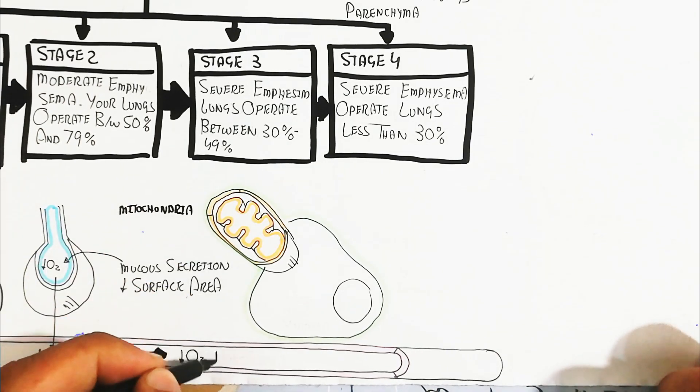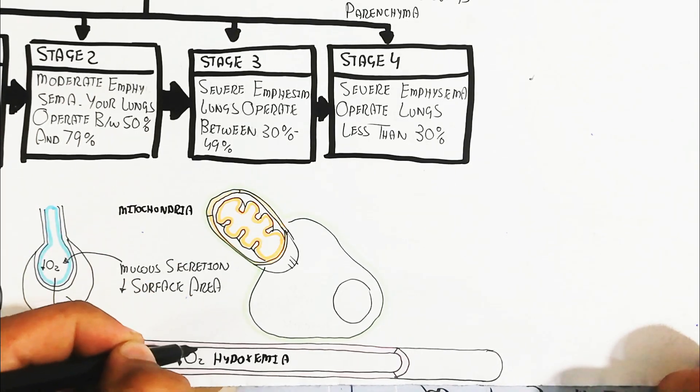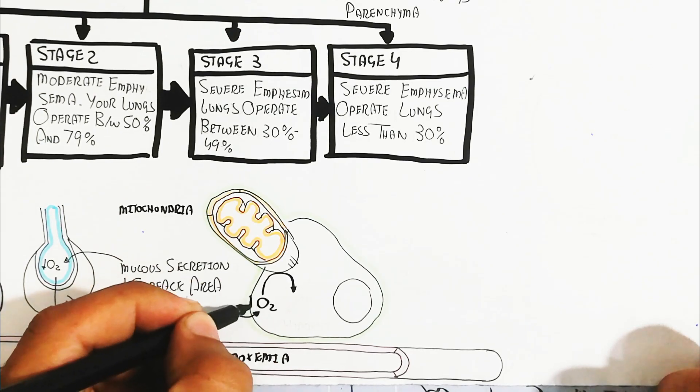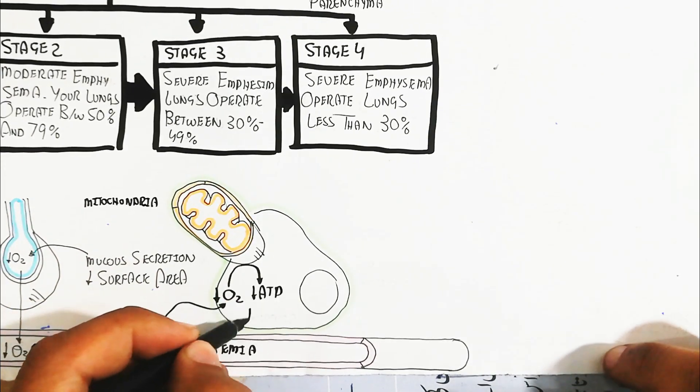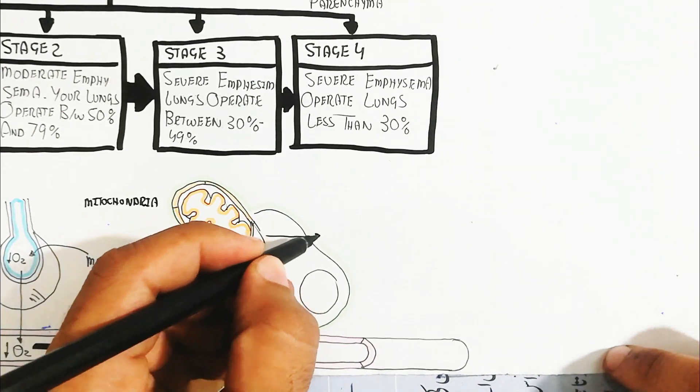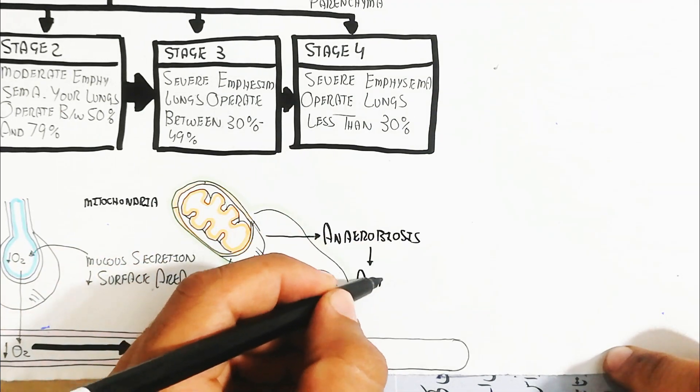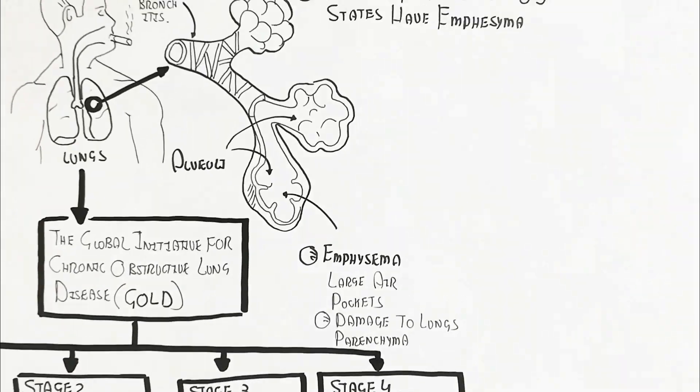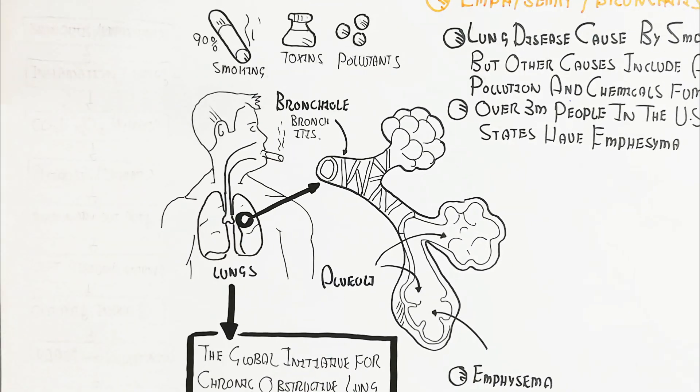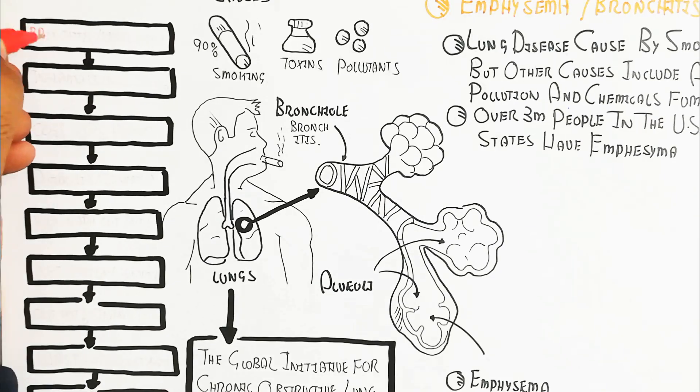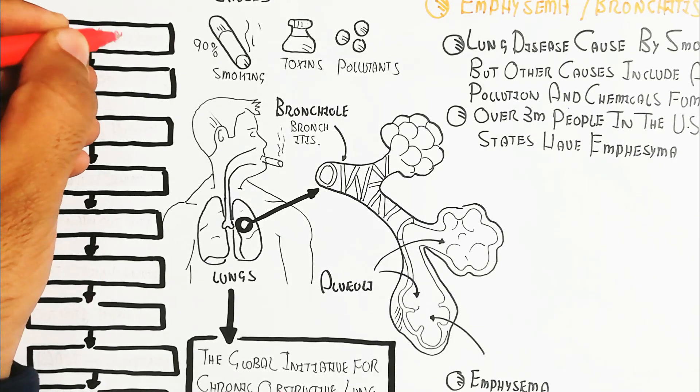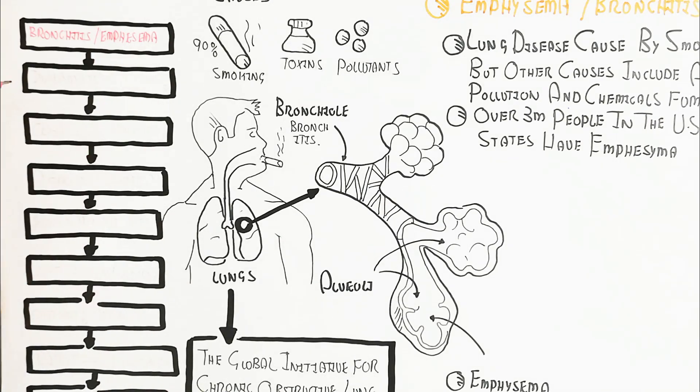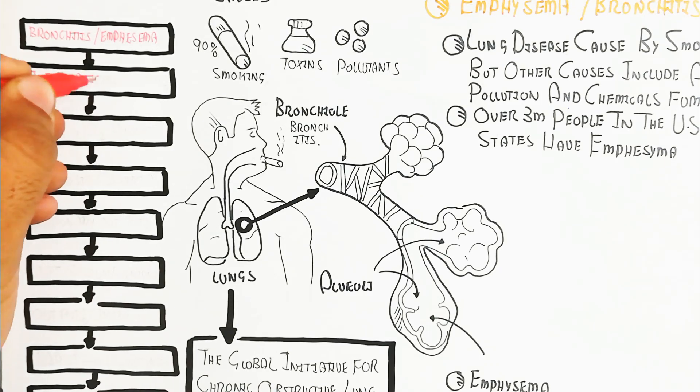Hypoxemia occurs when oxygen decreases, leading to tissue hypoxia and less ATP production. Anaerobic metabolism causes acidosis and apoptosis due to less oxygen and reduced aerobic ATP production.